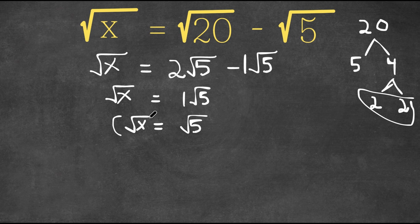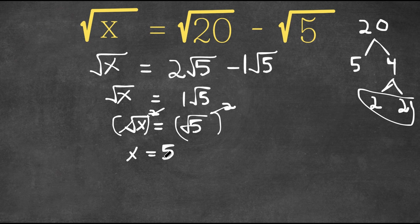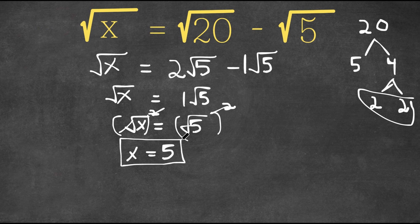So now I'm going to square both sides to cancel out the radical. Now the power is opposite of the root. So these two cancel out and on our left hand side, we have x is equal to, again, the power is opposite of root. So these two cancel out and 5. So this is our answer.